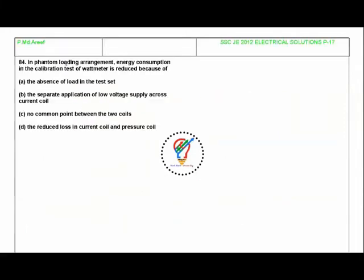Next question: In phantom loading arrangement, energy consumption in the calibration test of wattmeter is reduced because of: the absence of load in the test set, the separate application of low voltage supply across the current coil, no common point between the two coils, or the reduced loss in current coil and pressure coil.